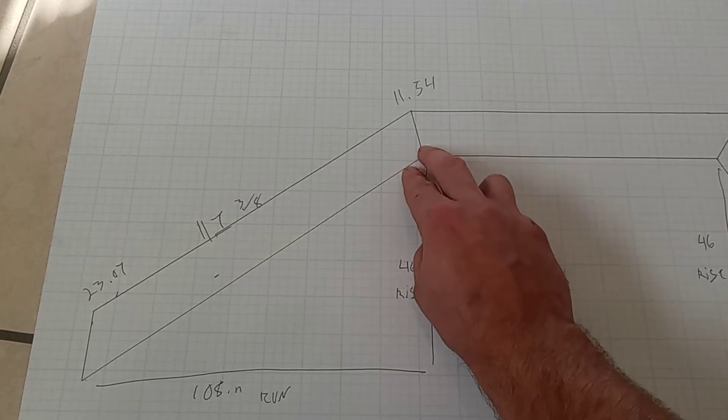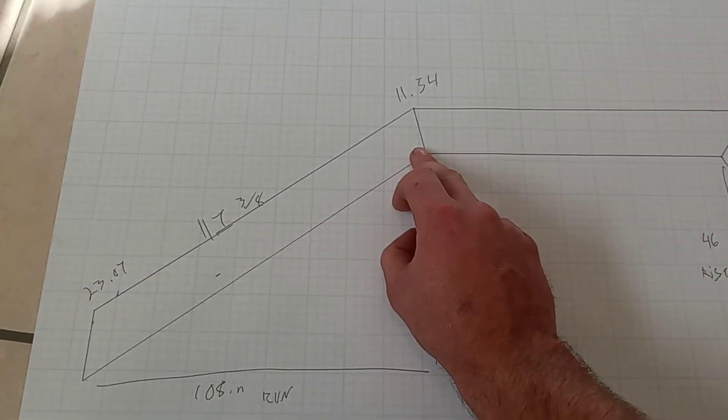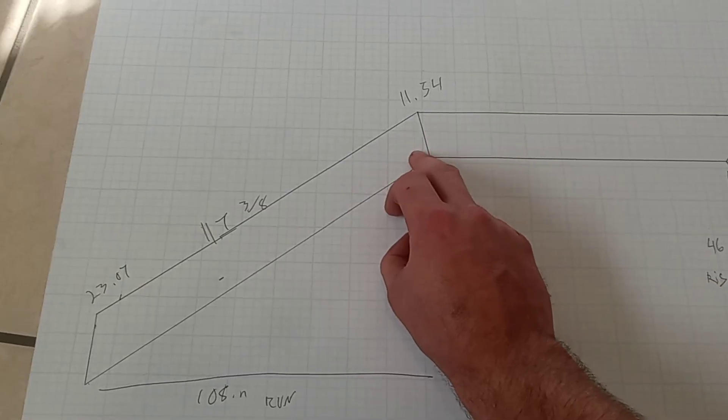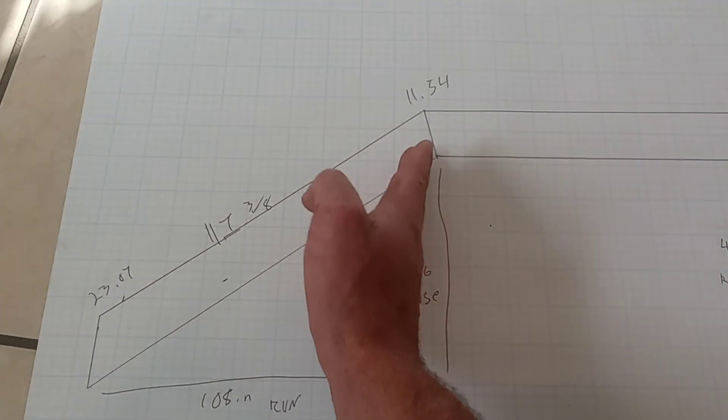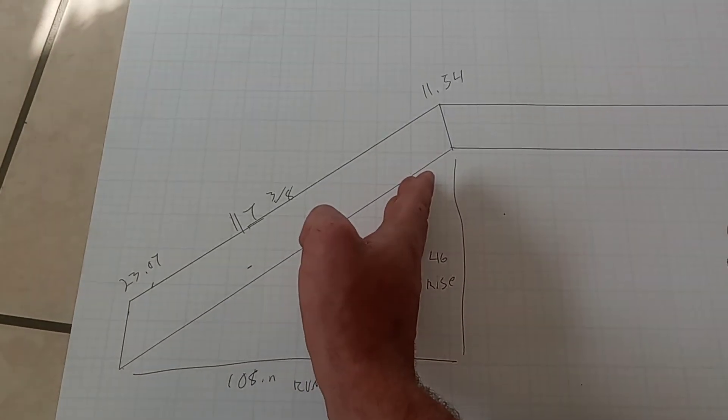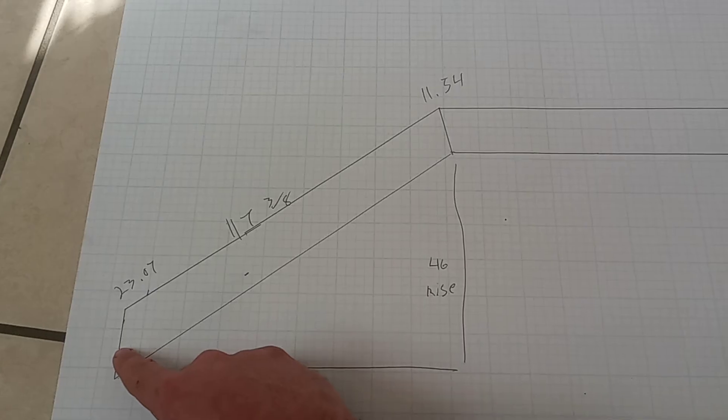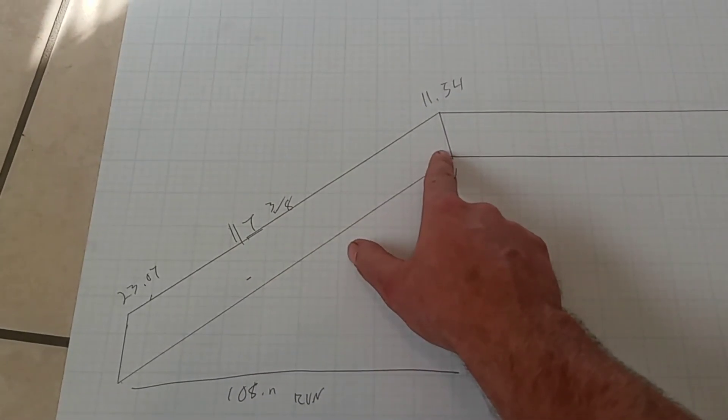Now, remember when you're doing this, this line, this cut, must be parallel to this line. If you cut it the other way, it's not going to work. Always remember that this super gutter cut has to be parallel with this cut.